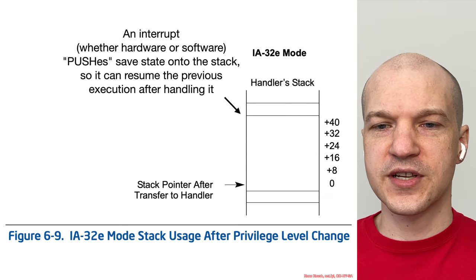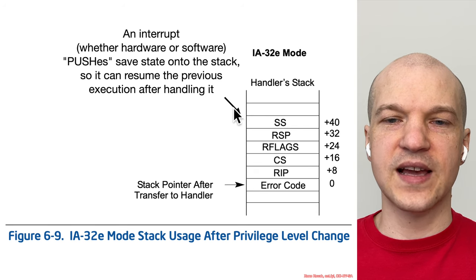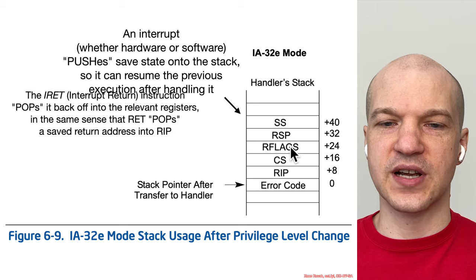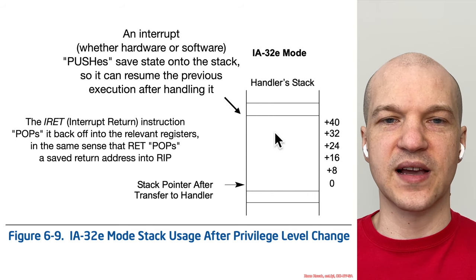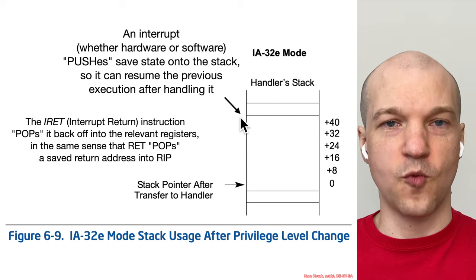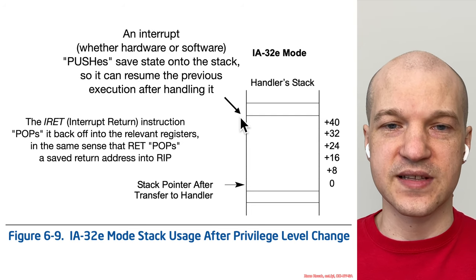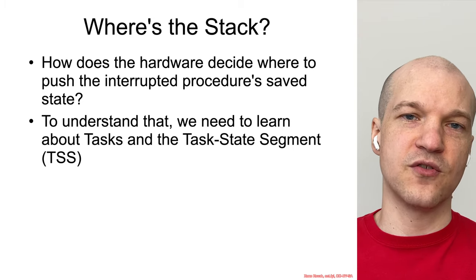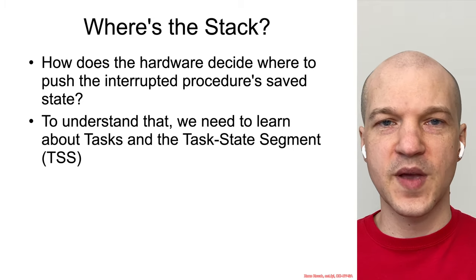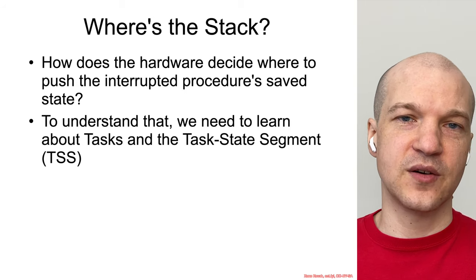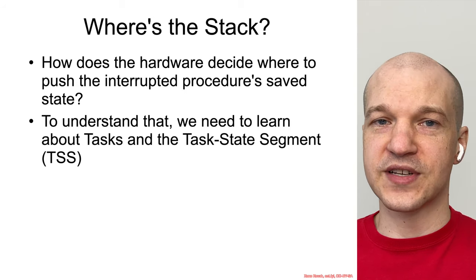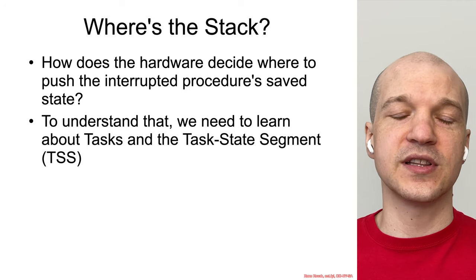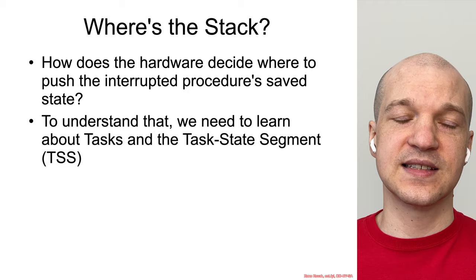The question is: the stack pointer is pointing somewhere, an interrupt occurs, information gets pushed onto the stack, and then an IRET occurs and pops it back off. Where does this information actually get pushed? To understand the privilege level transfer from ring 3 to ring 0 and where the information gets pushed, we're going to have to learn about a very old legacy mechanism of Intel hardware called tasks — and specifically, we're going to want to learn about the task state segment.